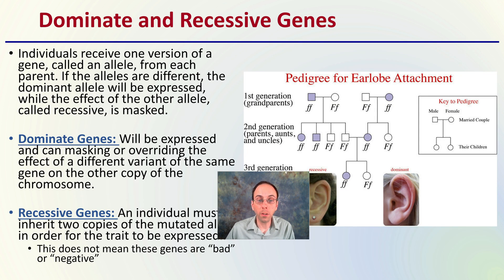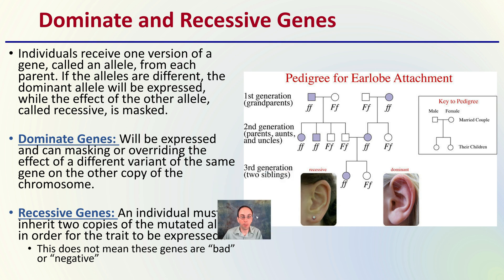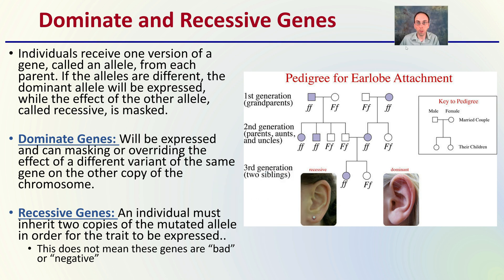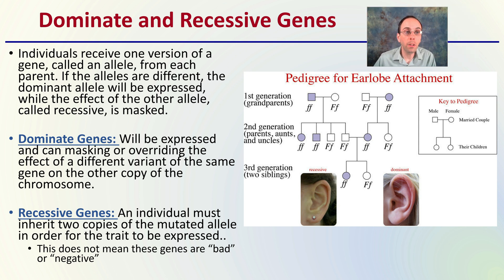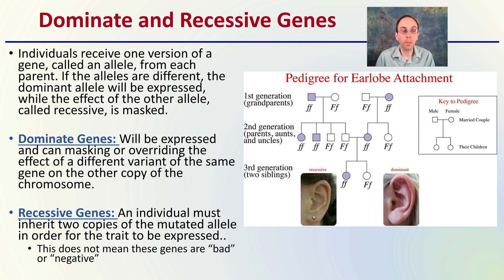First off, we have to understand the basics of genes — there are dominant and recessive genes, and understanding the difference between those two is important. Individuals receive one version of a gene called an allele from each parent. If the alleles are different, the dominant allele will be expressed, while the effect of the other allele, called recessive, is masked. A dominant gene will be expressed and can mask or override the effect of a different variant of the same gene on the other copy of the chromosome.